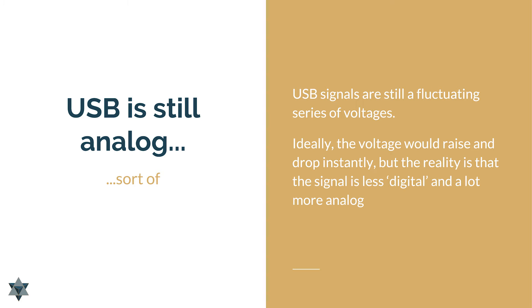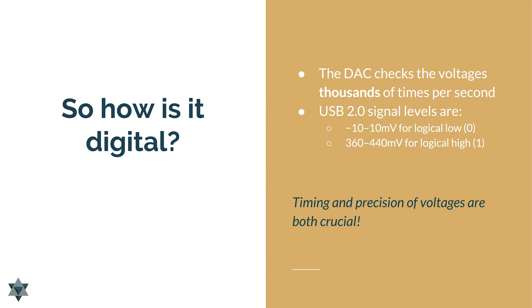If you look at something like optical by comparison, an optical signal can actually be on or off. It's a light — it's either on or it's off. There's not a dimming the way there is with a voltage on a cable.